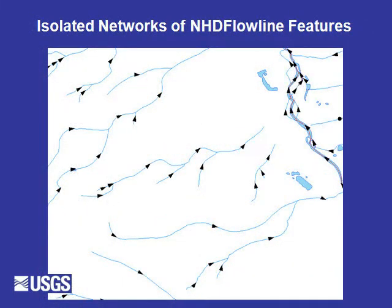Here we have an example of isolated networks. These networks are all over in the NHD and are correct to be there. If we were 100% certain that a small isolated network should connect to the larger network, we have the ability to add a connector that would allow the isolated network to connect to the larger network.